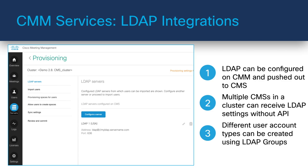Let's talk about the Cisco Meeting Management Server, or CMM. This is a tool to manage many different aspects of a CMS solution and also provides added services of its own, giving you a really robust solution. Prior to CMS version 2.9, LDAP mappings for importing users were configured via the CMS API, but starting in version 2.9, you can use CMM to enter LDAP server details and configure LDAP mappings. LDAP users are added via mappings to existing groups on your LDAP server, and Meeting Management uses your LDAP server to authenticate these users by checking their group membership when they sign in.